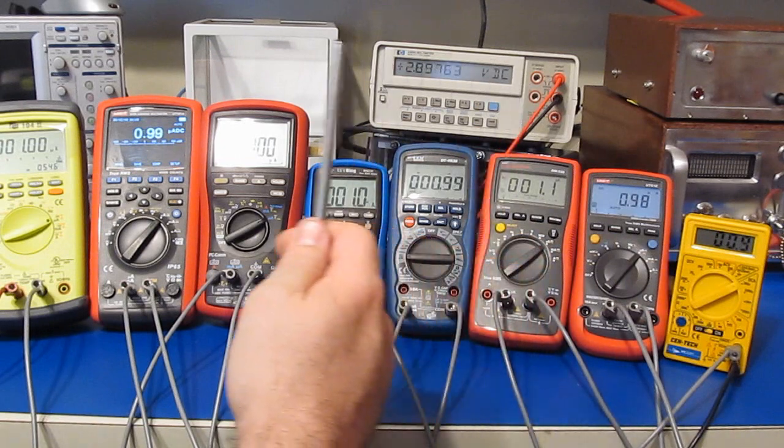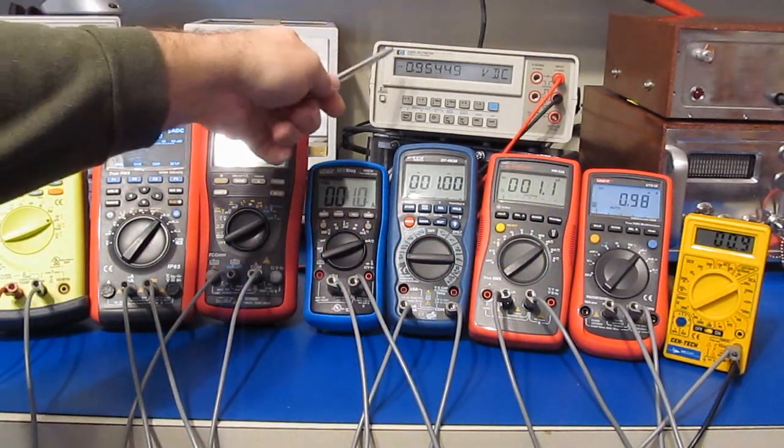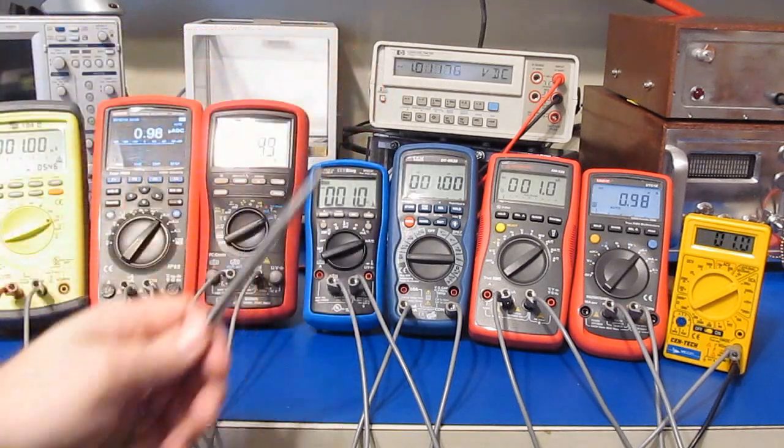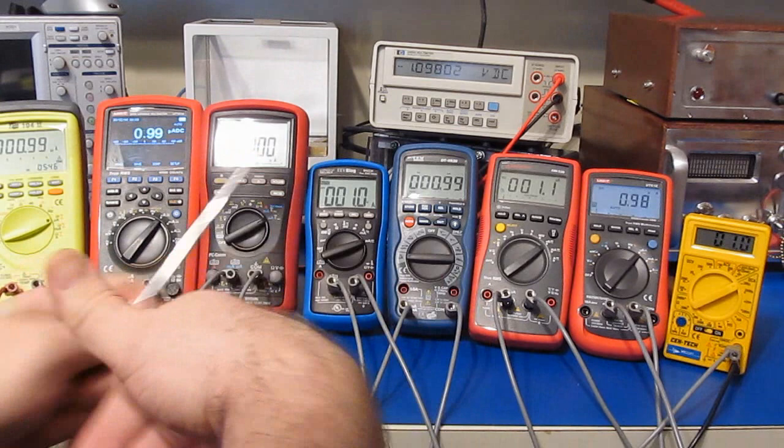All the meters are reading roughly a microamp. This meter has been on for about a half an hour now. This is my 3468A and I'm going to use it to just measure the voltage drop across each one of these meters and we'll go ahead and write that down.